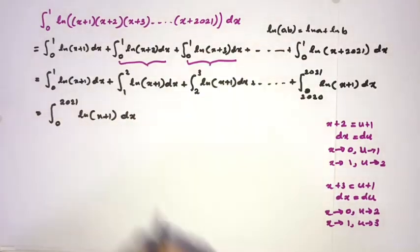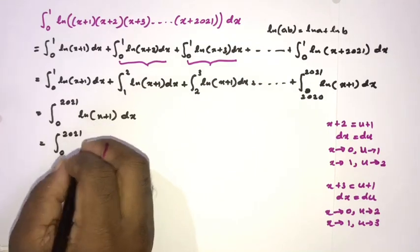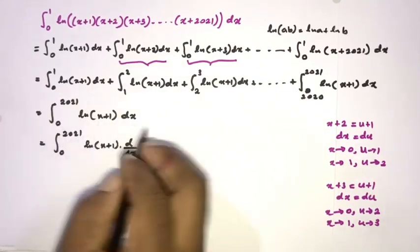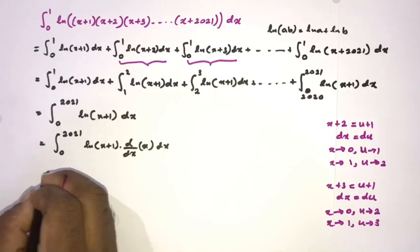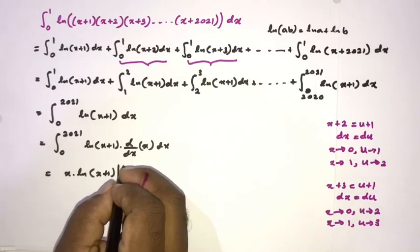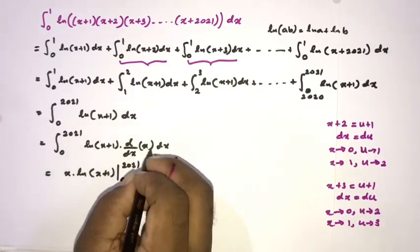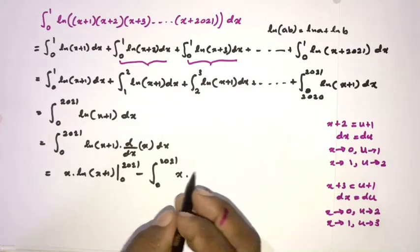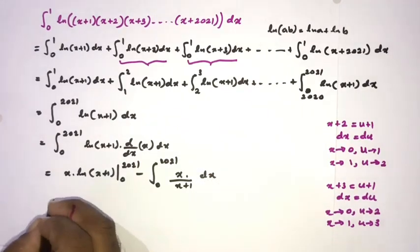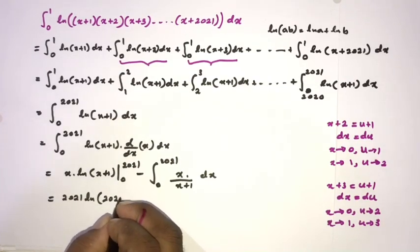So we have the single integral from 0 to 2021 of ln(x+1) dx. We apply integration by parts (IBP): take ln(x+1) as the first function and 1 as the second. This gives [x·ln(x+1)] from 0 to 2021, minus the integral from 0 to 2021 of x/(x+1) dx.